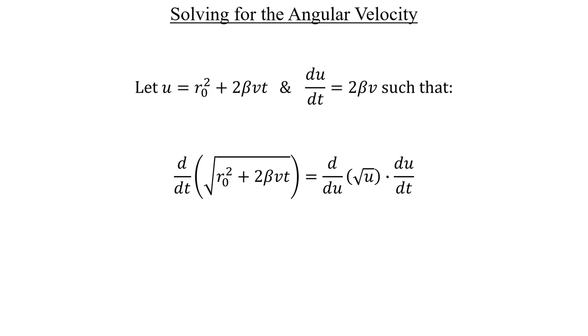Our chain rule states that the derivative that we want here on the left is equal to the derivative of the outer function with respect to the substitution variable multiplied by du dt. Well, we know what du dt is already. So we just need the derivative of this outer square root function. Recall that you can rewrite the square root of a variable as that variable raised to the one-half power. So feel free to do that if it makes things easier for you.